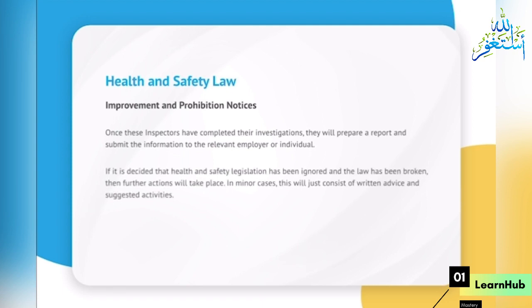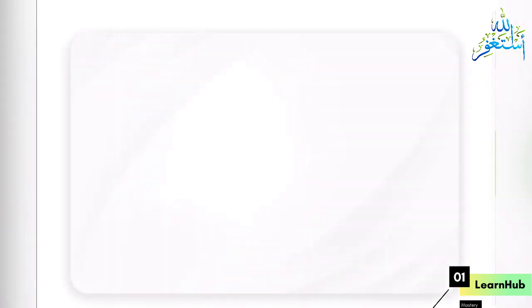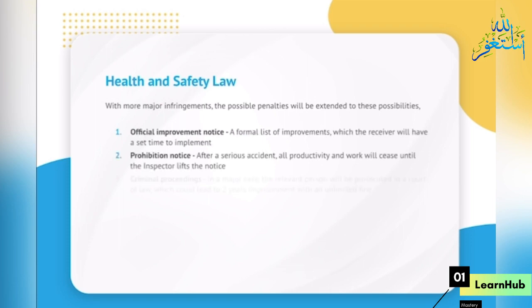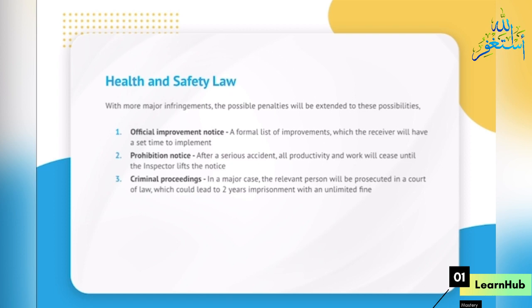Improvement and Prohibition Notices. Once inspectors have completed their investigations, they will prepare a report and submit it to the relevant employer or individual. If health and safety legislation has been ignored and the law broken, further actions will take place. In minor cases, this will consist of written advice and suggested activities. With more major infringements, the possible penalties are: an official improvement notice — a formal list of improvements with a set time to implement; a prohibition notice — after a serious accident, all productivity and work will cease until the inspector lifts the notice; and criminal proceedings — in a major case, the relevant person will be prosecuted in a court of law, which could lead to two years imprisonment with an unlimited fine.